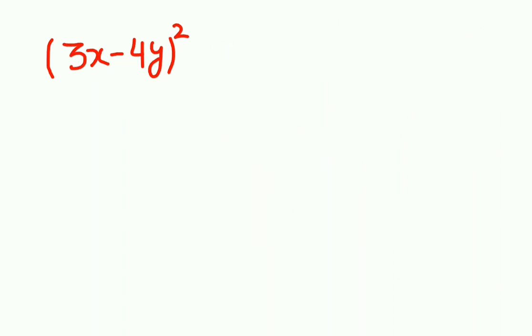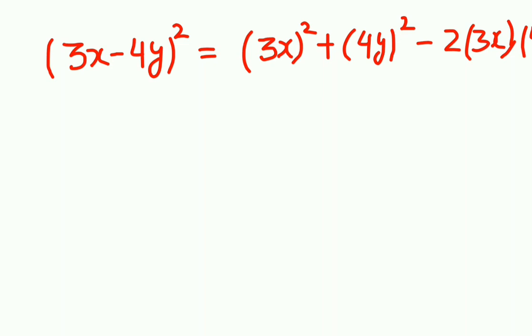Next 3x minus 4y whole square. First term is 3x ka whole square plus 4y whole square minus 2 into 3x, bracket me into 4y, bracket me.